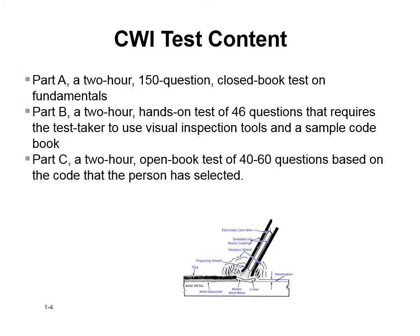Once you've gathered up all your information and submitted it to the AWS and they give you the okay to take the test, you need to know what's on the test. It's a three-part test. Part A is a two-hour, 150-question closed book test on the fundamentals of welding, welding metallurgy, welding symbols, NDE symbols, and all kinds of basic welding-related lingo and questions.